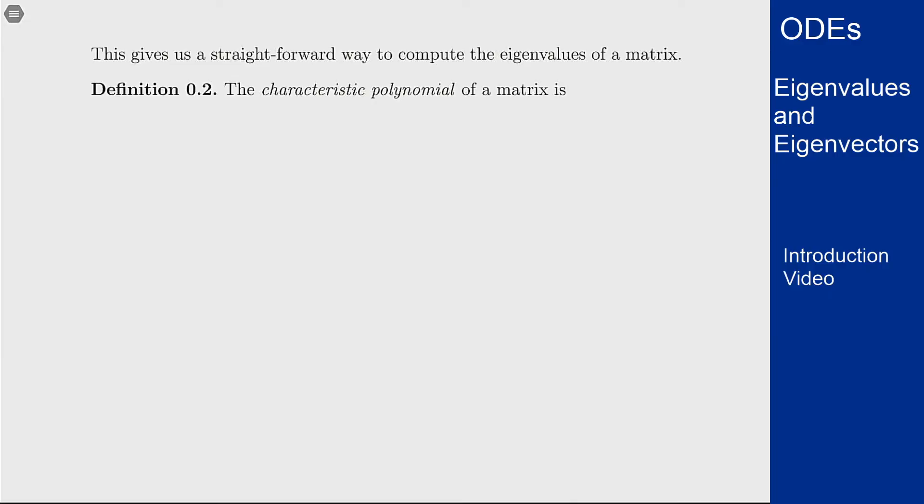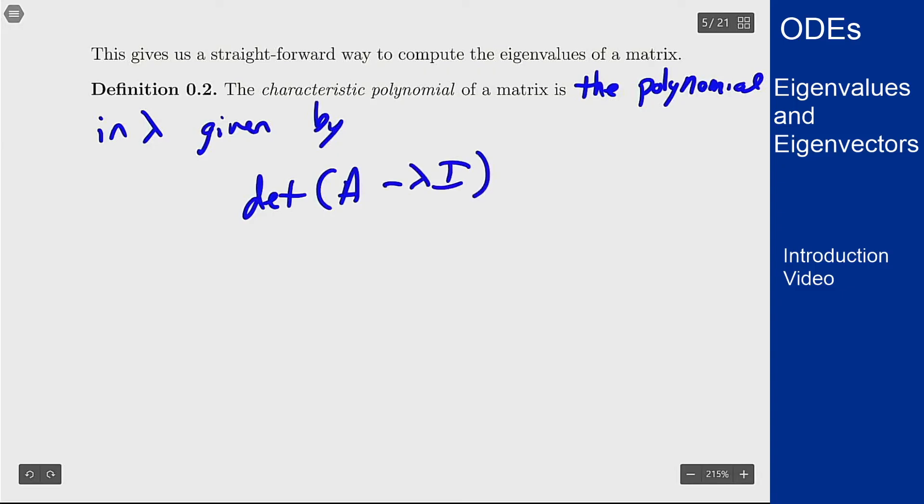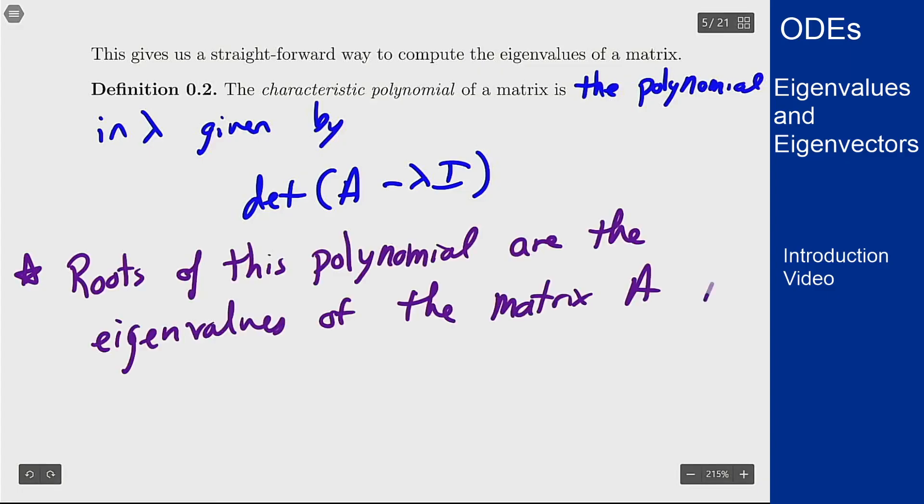The straightforward idea here is the following: you define the characteristic polynomial of a matrix to be the polynomial in lambda given by determinant of A minus lambda I. This will always be a polynomial, and the roots of this polynomial are the eigenvalues of the matrix A, and that's the key point. So for a given matrix you can find the characteristic polynomial by just taking determinant A minus lambda I, working it all out, getting the polynomial that you get, and the roots of that polynomial will be the eigenvalues of the matrix.